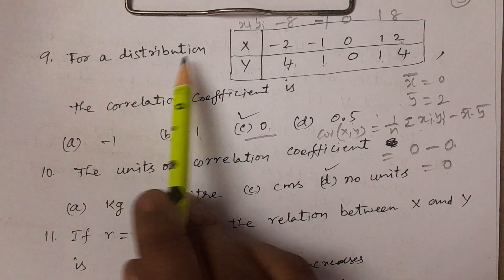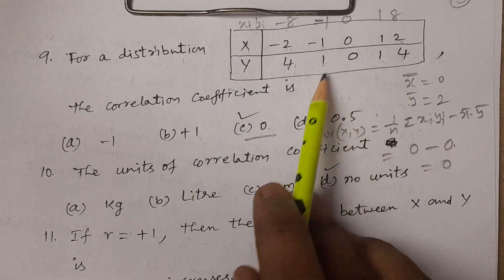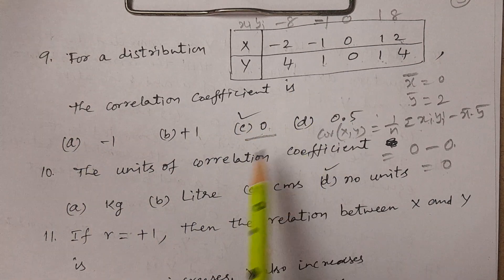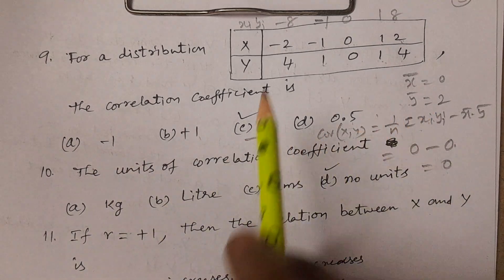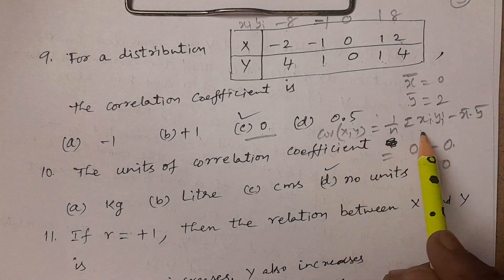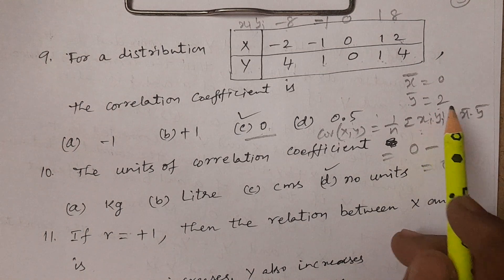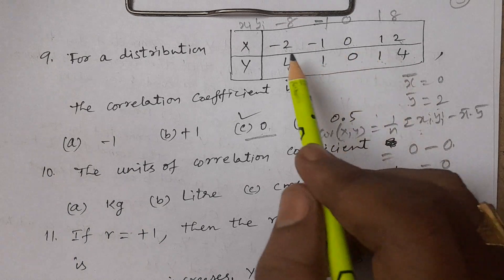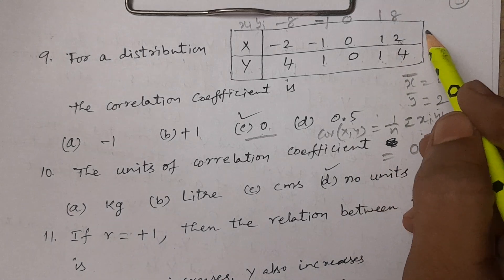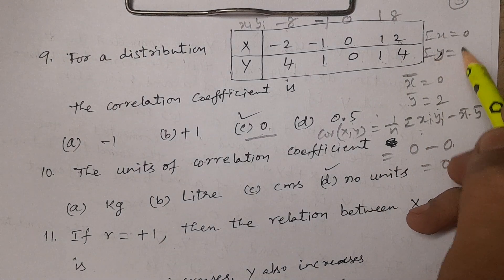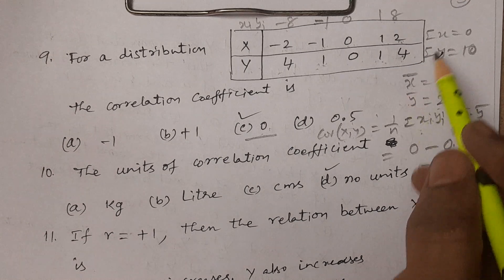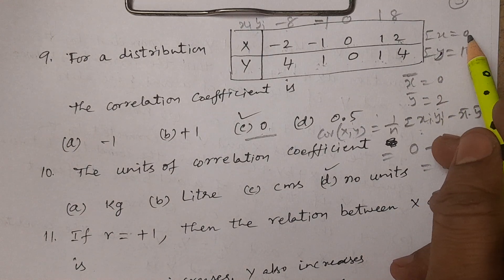In Telugu explanation: for this distribution, we calculate the correlation coefficient. First compute x bar then y bar. Summation x is zero, therefore x bar is zero. For y bar, the sum is four plus one plus zero plus one plus four equals ten, so y bar equals two.